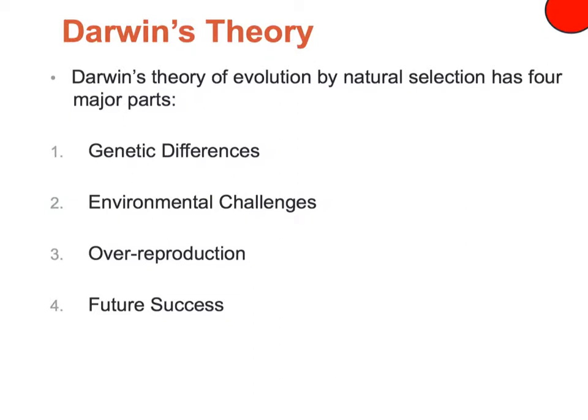Darwin's Theory of Evolution basically has four major parts to it. First, genetic differences — there are differences within a population because of different genes; we know about different forms of an allele. Those differences are what nature is basically going to choose based on the environment. The second part is environmental challenges.